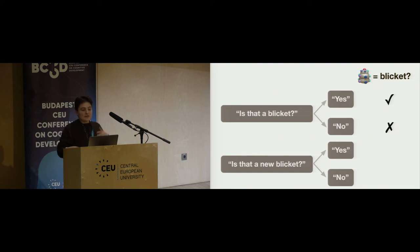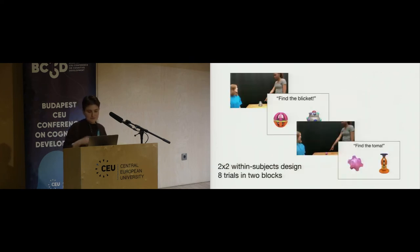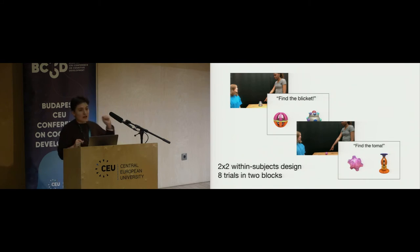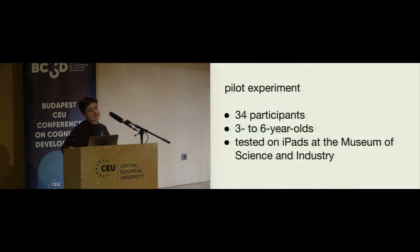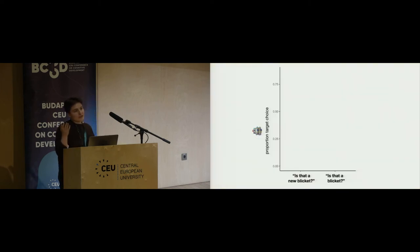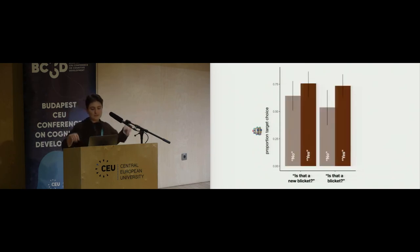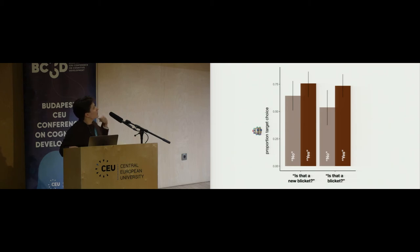If you hear 'is that a blicket? Yes,' you should be fairly certain the thing is a blicket; if you hear 'is that a blicket? No,' you should be less certain. But with 'is that a new blicket?' the identity of the object is not what's at issue — you should be relatively indifferent to the answer in determining the mapping. Kids did eight trials in a 2x2 within-subjects design. We had 34 participants, three-to-six-year-old children, tested on iPads at the Museum of Science and Industry in Chicago. Directionally, we see kids care more about the answer type when the question was 'is that a blicket?' than when it was 'is that a new blicket?'